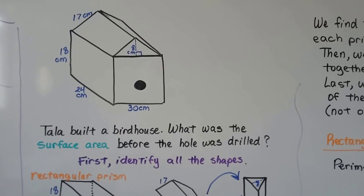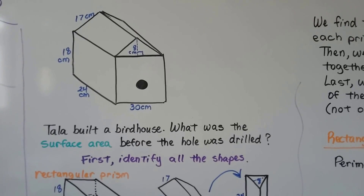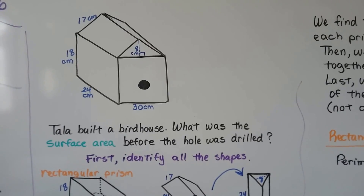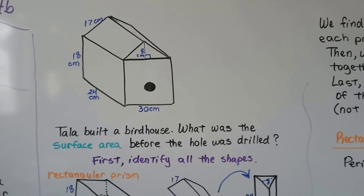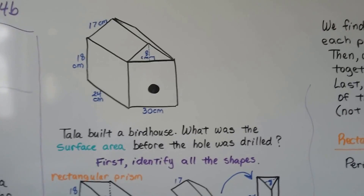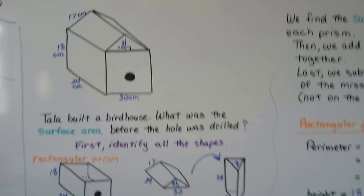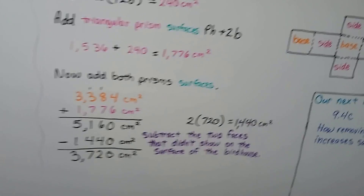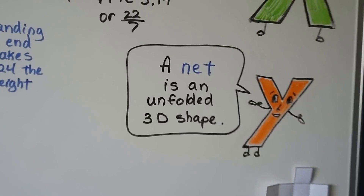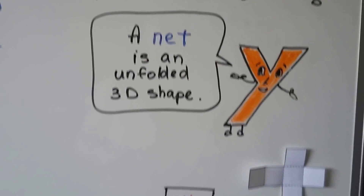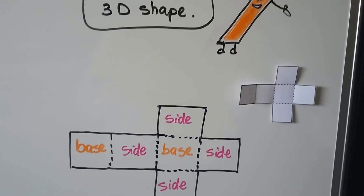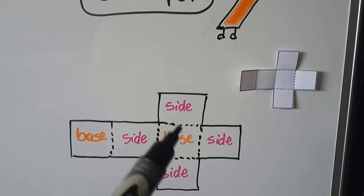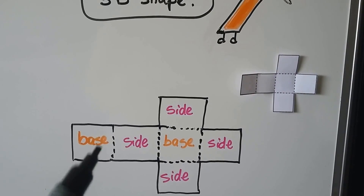I know this can be confusing — you can always rewind and re-watch that section of the video and maybe it'll make more sense. Remember that a net is an unfolded 3D shape, and we can see the sides and the bases.